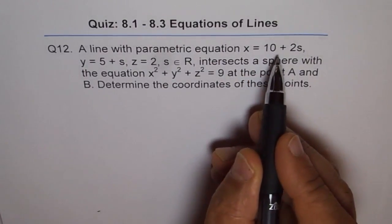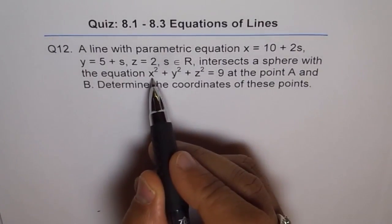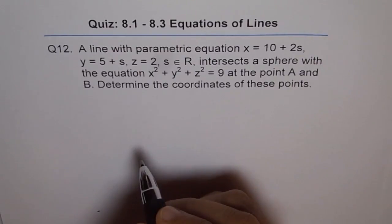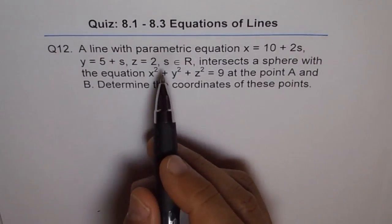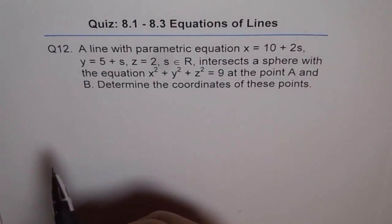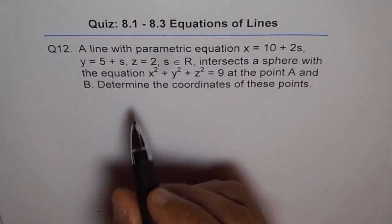We will substitute 10 plus 2s for x in the equation of sphere, and then expand and simplify and then solve for the variable s. Then we should be in a position to get the points A and B. So that is the strategy which we are going to follow.